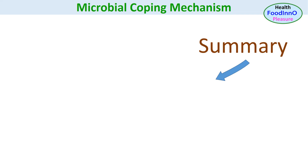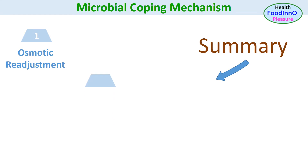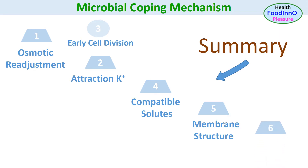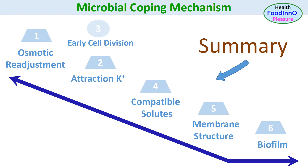Low water activity can be achieved through desiccation — that is, removal of water — or by adding solutes, which causes osmotic stress. The coping mechanisms to be covered include: osmotic readjustment to restore turgor pressure, attraction of potassium ions, transient early-stage cell divisions, formation of compatible solutes, structural changes of the cell membrane, biofilm formation, and changes in gene expression which control most metabolic functions of a microbial cell.